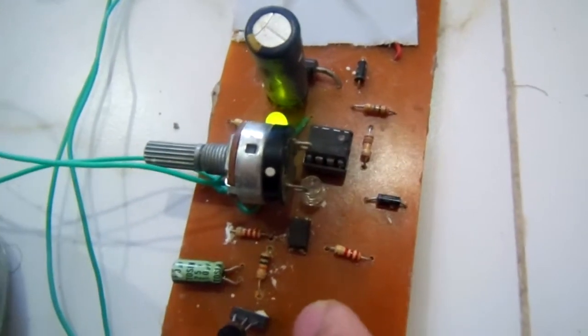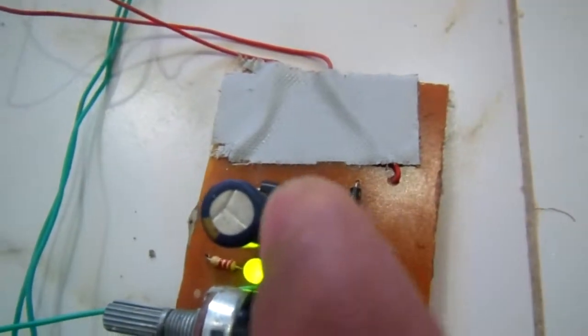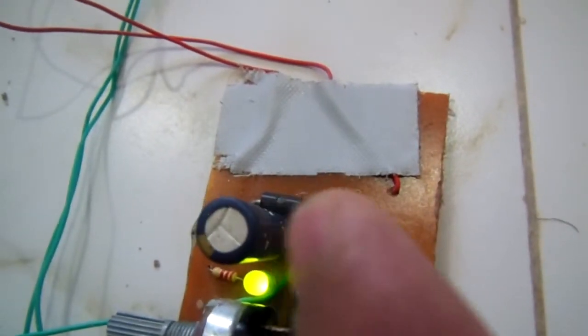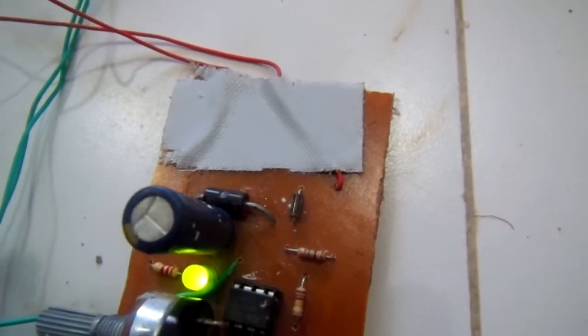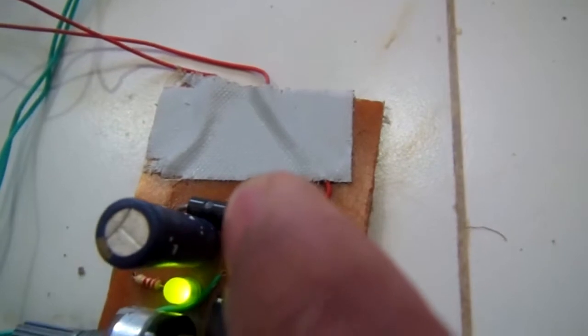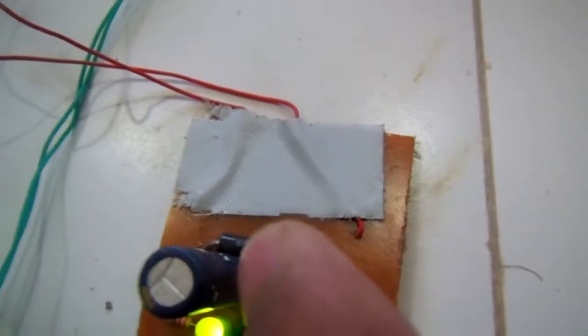This capacitor has been used for filtering. When AC changes into DC, it will be pulsating DC current. In order to smooth the DC current, we use the 1000 microfarad capacitor.